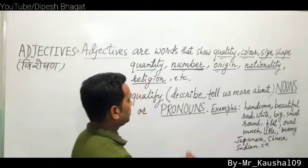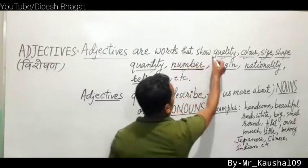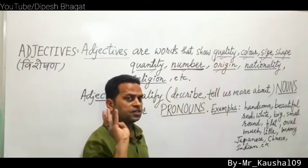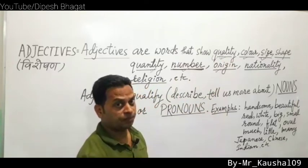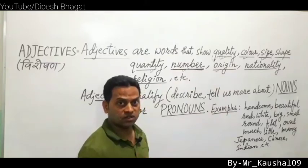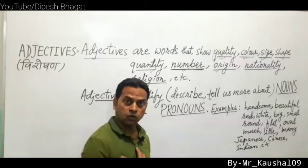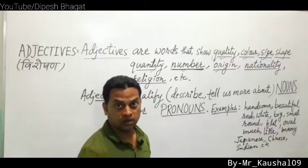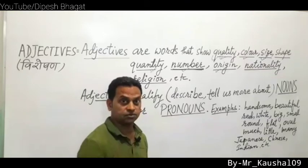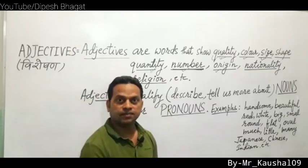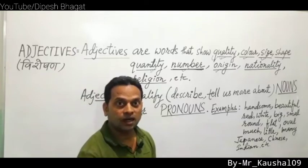Adjectives show the quality of something — quality can be positive or negative. For example, a person can be ramro (good quality) or naramro (negative quality). For example: 'Hari is very handsome.' Here, 'handsome' is an adjective showing positive quality.